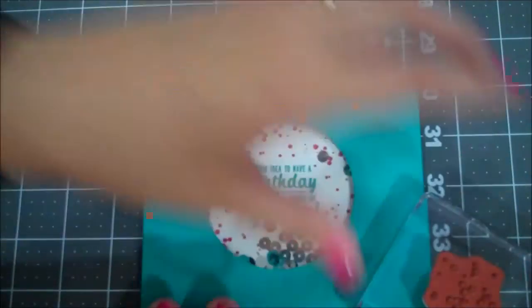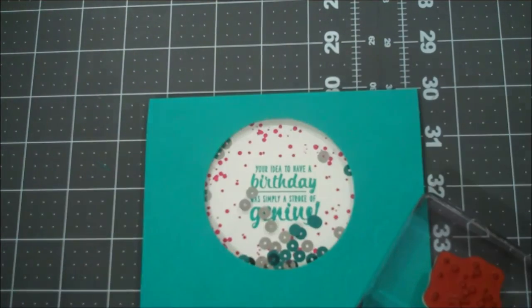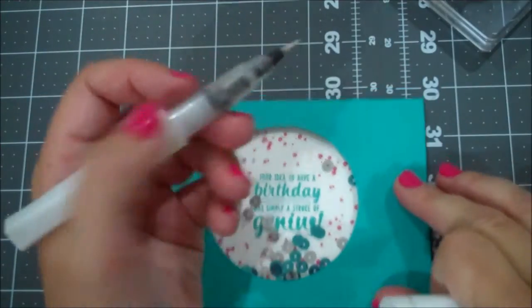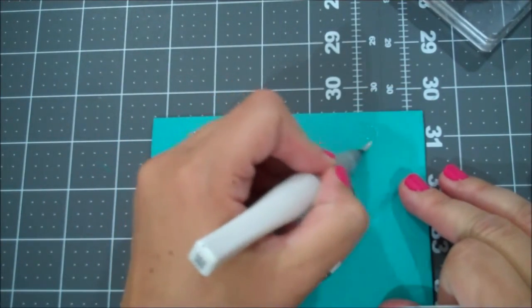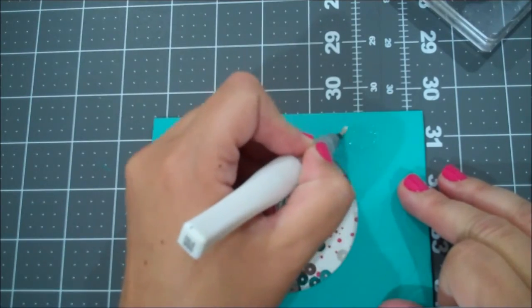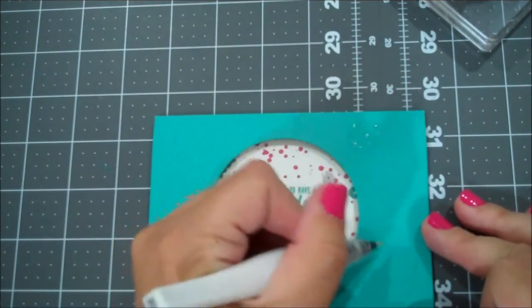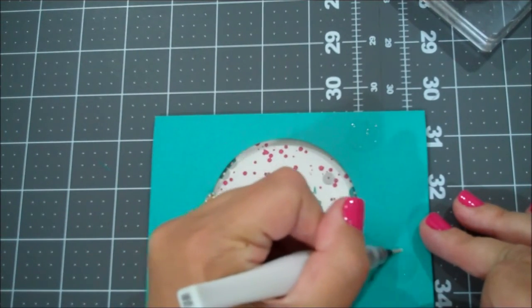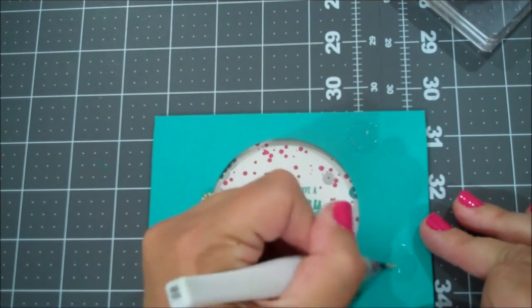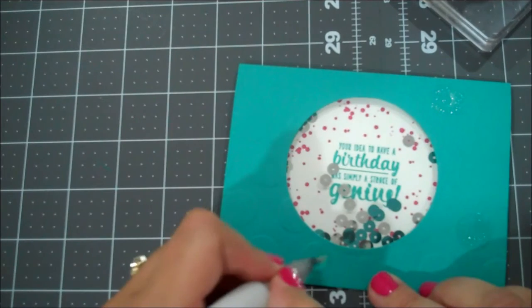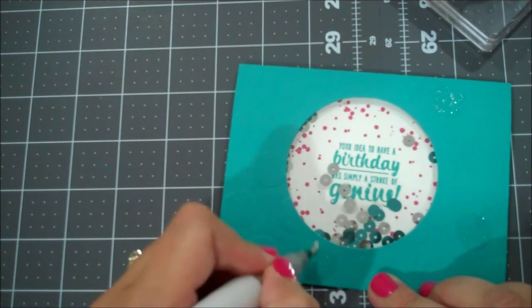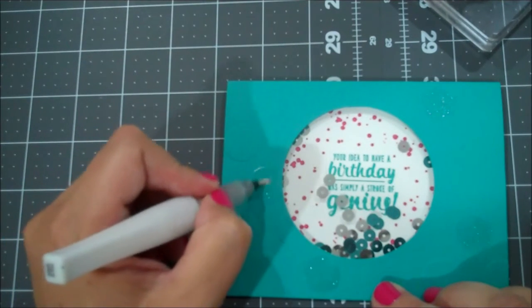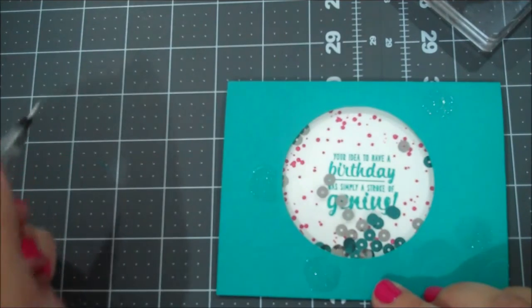Okay. So one more thing that I did was I actually took my Wink of Stella, my clear, and I just chose to kind of go over some of these circles just to give it a little bit more sparkle. You know, the embossing gives you some nice texture and I just love to put a little bit more, who doesn't love glitter. And I think for this fun style of card, it's nice to add a little bit more, so I am going to do a few circles.